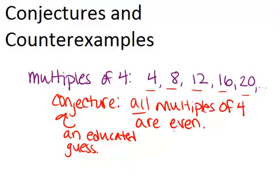So we said this, but we don't know for sure. Perhaps down the line, if we kept listing off multiples of 4, eventually we would get to one that's not an even number. But based on the examples we've seen, it is. So that's why it's a conjecture. It's an educated guess, not yet proven true.